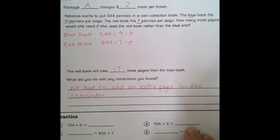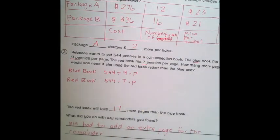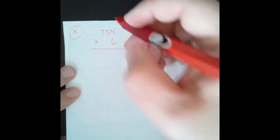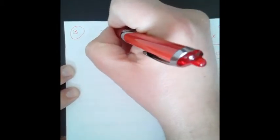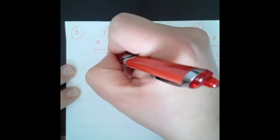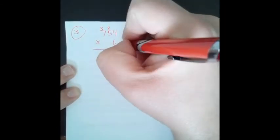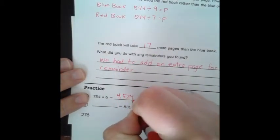All right, so our practice here is some multiplication. So I'm going to do 3 and 4 for you, and you'll do 5 and 6 on your own. So 754 times 6, going to do the traditional way. 6 times 4 is 24, carry the 2. 6 times 5, or 5 times 6 is 30, plus 2 is 32. 7 times 6 is 42, plus 3 would be 45. So it's 4,524.